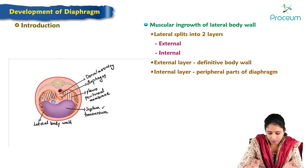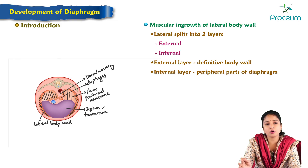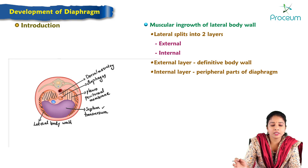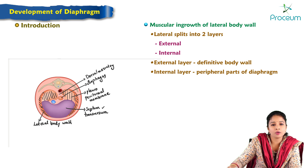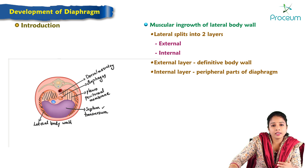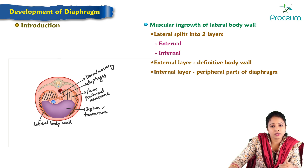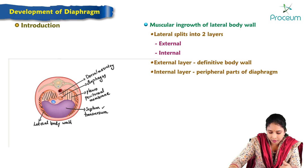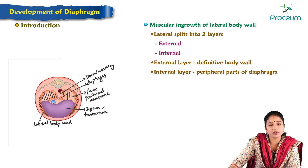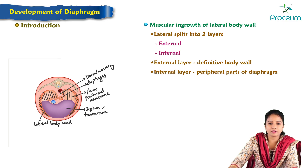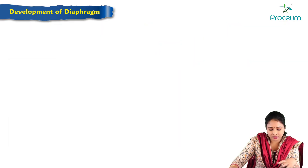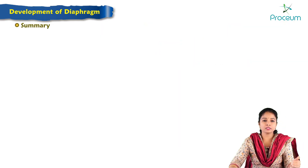The external layer of the lateral body wall forms the definitive body wall. The internal layer fuses with the pericardioperitoneal membrane and septum transversum to form a complete diaphragm.